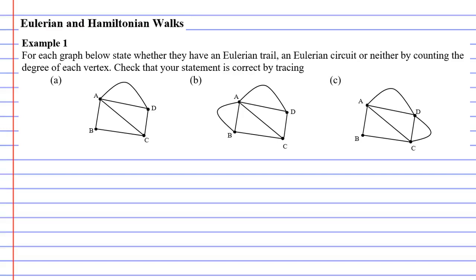In this video, we're going to complete example one and check whether an Eulerian trail exists, or an Eulerian circuit, or neither exists. We're going to do it in two different ways: first, by counting the degree of each vertex, and then by tracing over the graph.